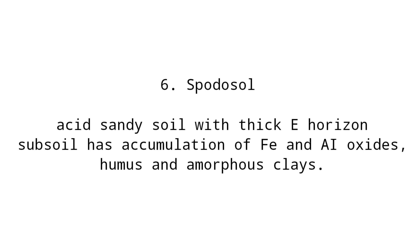Number six soil order is tinatawag nating spodosol — acid sandy soil with thick A horizon. Yung subsoil niya has accumulation of Fe and aluminum oxide, humus and amorphous clay. Dahil accumulated siya by Fe and aluminum oxide, this is an acidic soil.